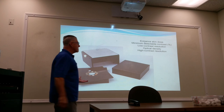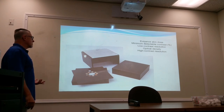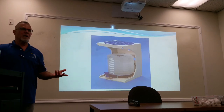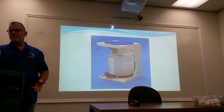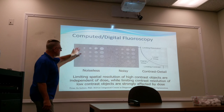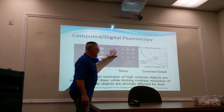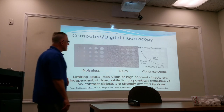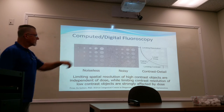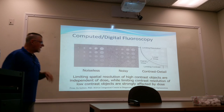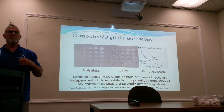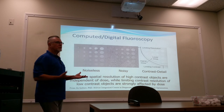You want to look at entrance skin dose, establish minimum detectable contrast, look at low contrast resolution, optical density, and high contrast resolution. There are phantoms of every kind of design for these tests. This is a special cardiology phantom — in a noiseless image you can see everything clearly; with too much noise you have problems. Using contrast detail phantoms, you can plot results: limiting spatial resolution of high contrast objects is independent of dose, while limiting contrast resolution of low contrast objects is strongly affected by dose.